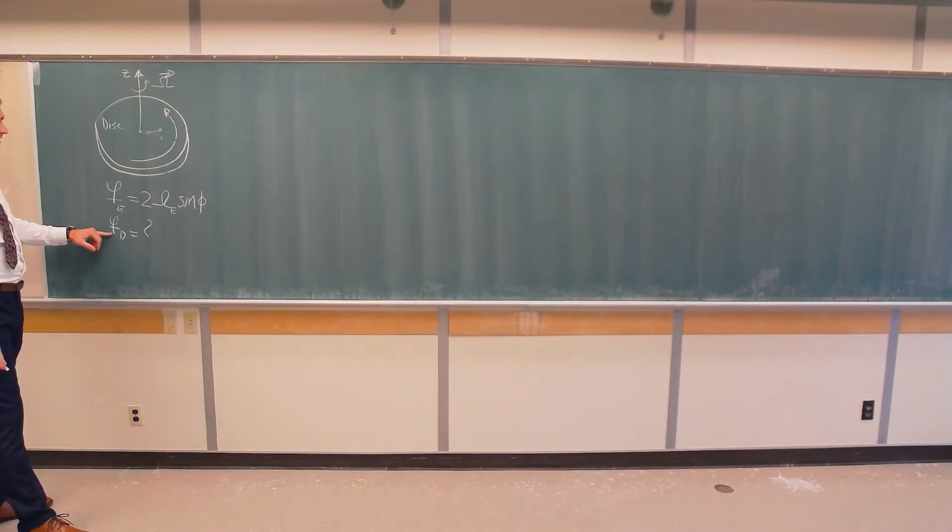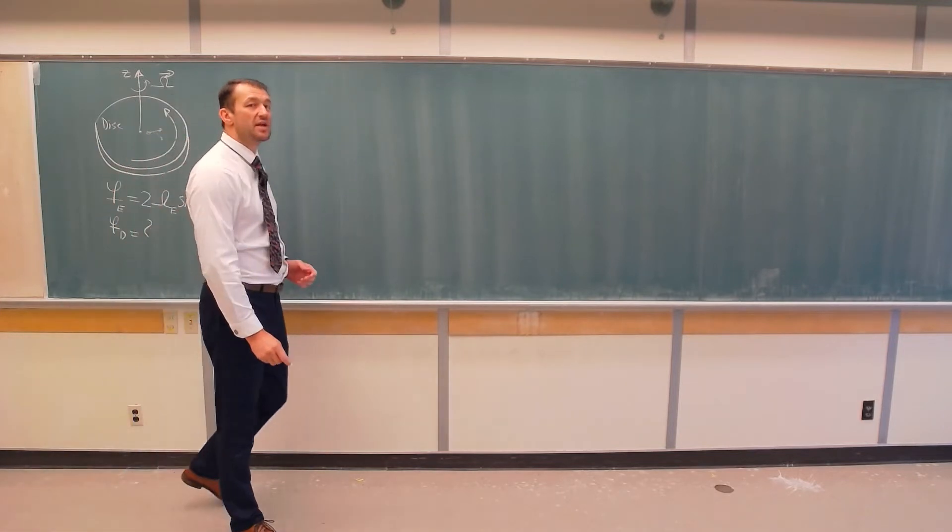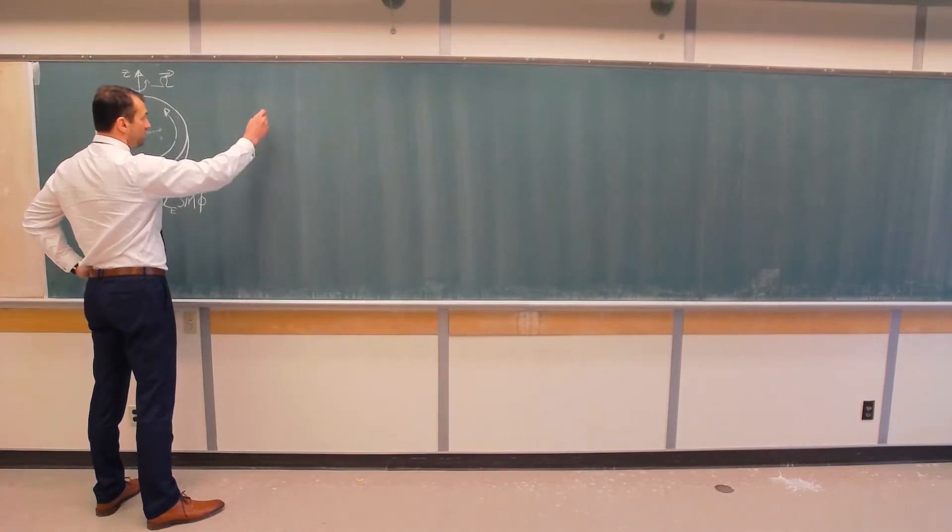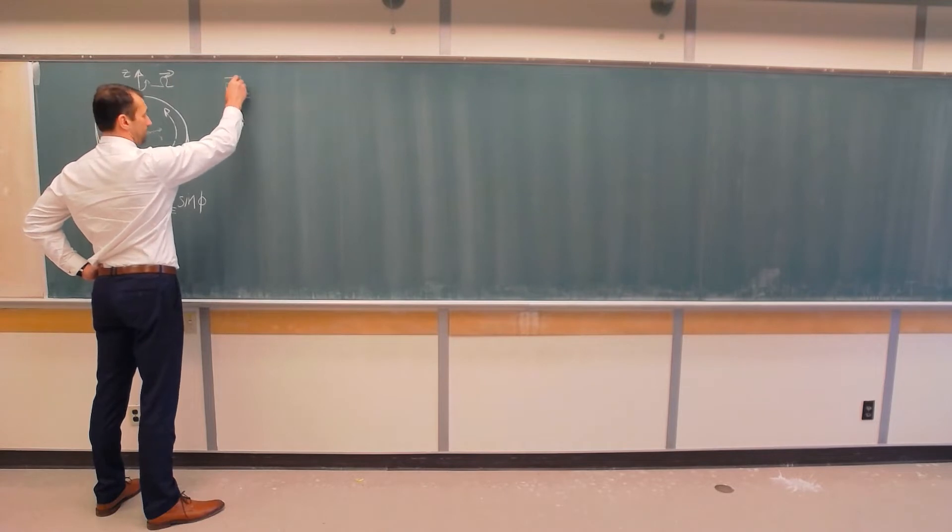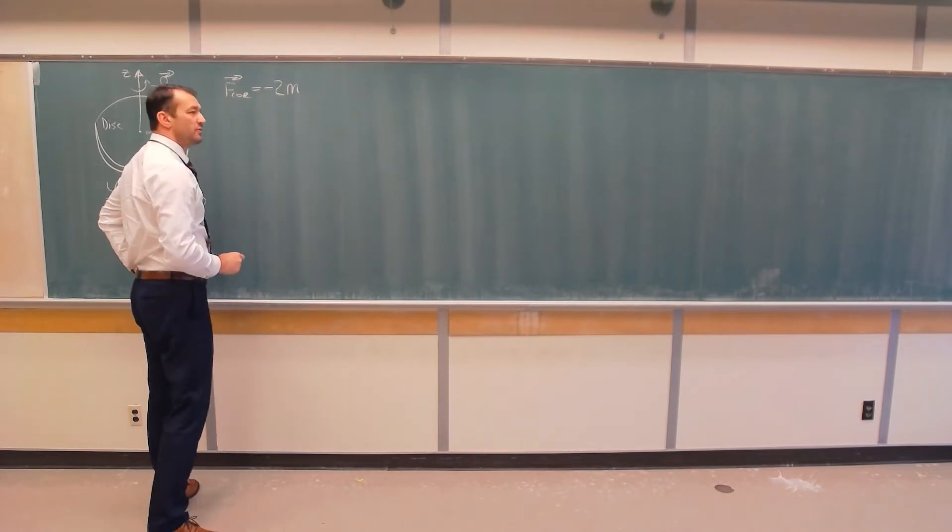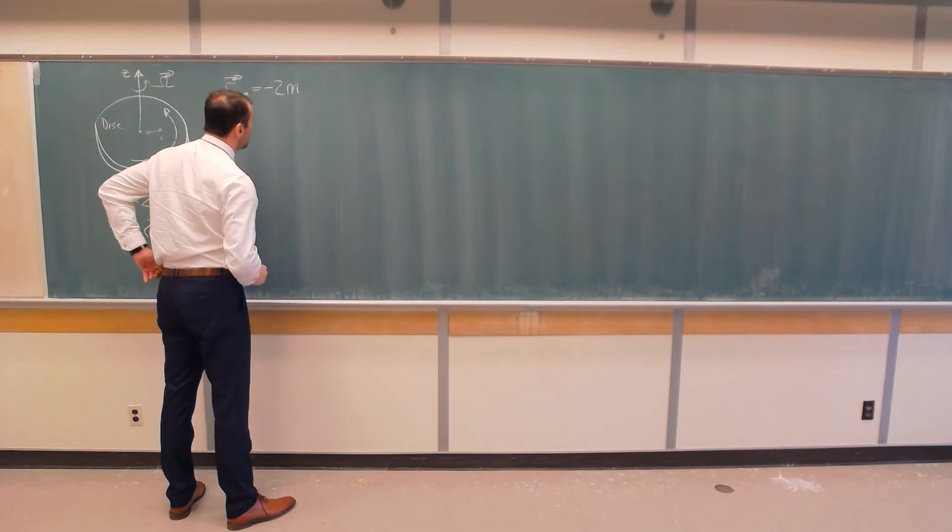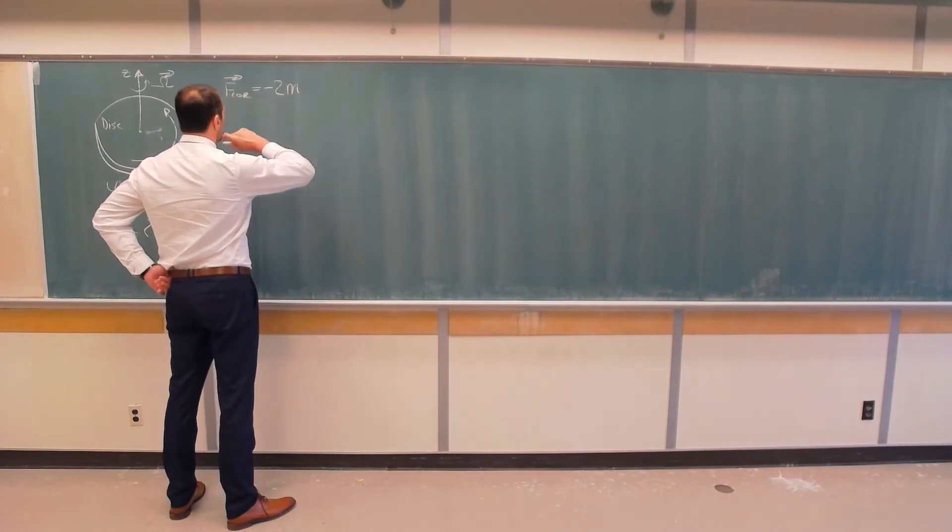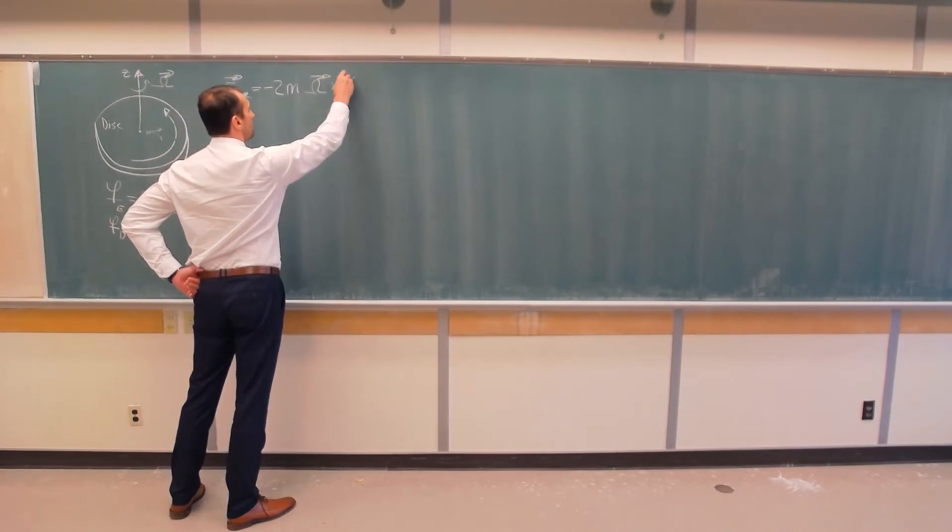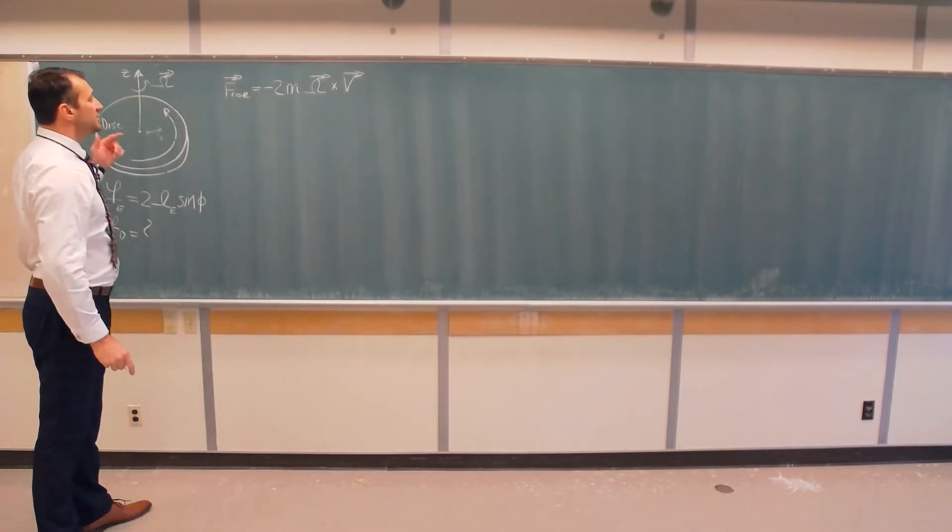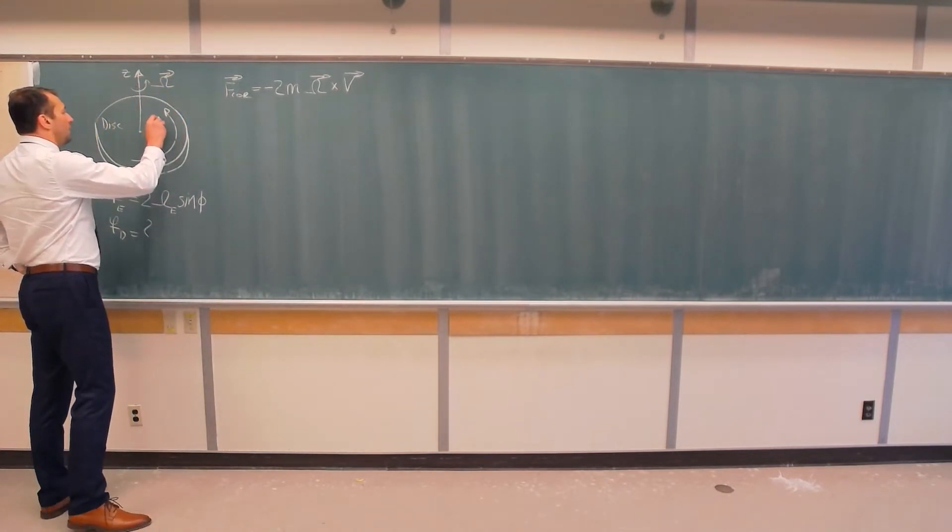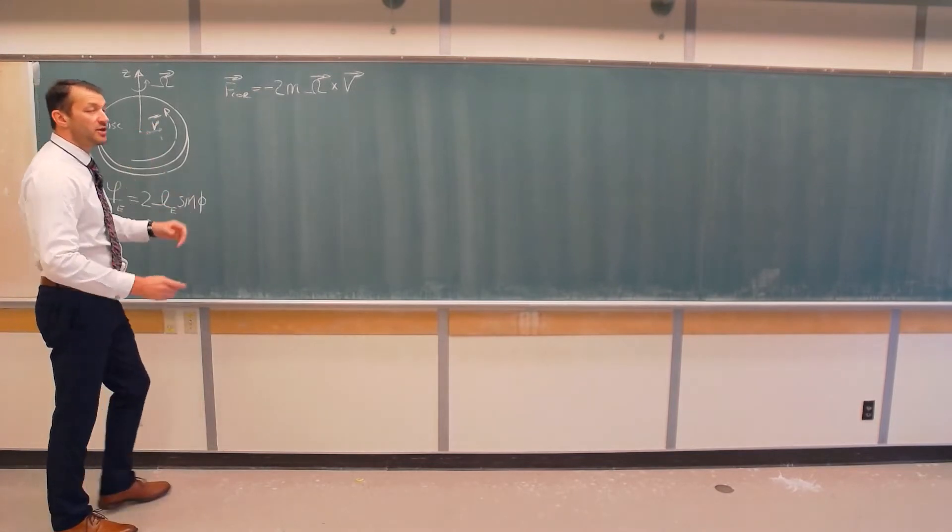To find this, we just follow basically the same principle that we did in the case of planet Earth. We know from previous videos that Coriolis force is equal to minus 2m, where m is mass of the particle on which Coriolis force is affecting, omega cross v, where omega is angular velocity of the system, in this case this disk, and v is velocity in respect to disk. Of course, you have to know if velocity is zero, there is no Coriolis force.